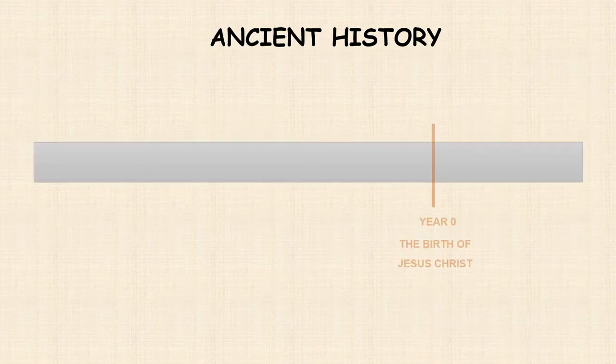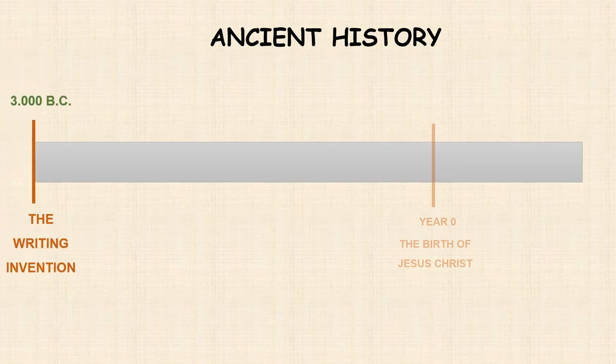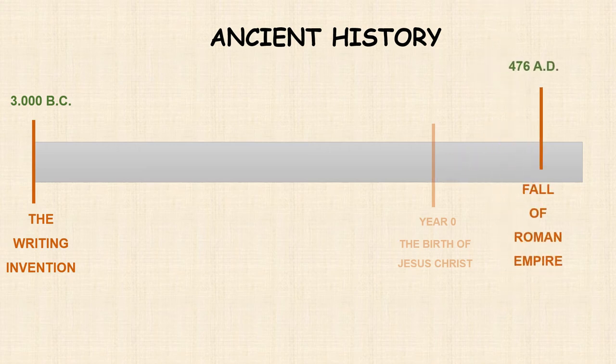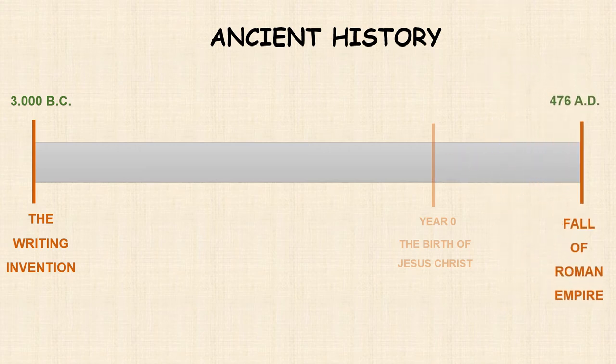Ancient history began with the invention of writing in the year 3000 BC and finished in the year 476 AD with the fall of the Roman Empire.